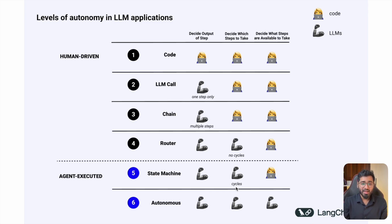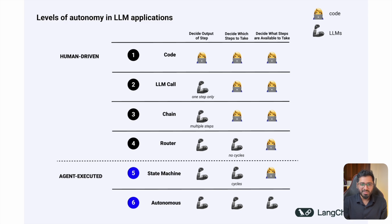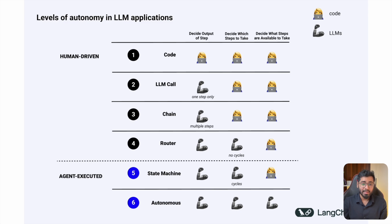The sixth level is completely autonomous agents, where all three columns are handled by the AI. We are not really there yet — there are startups trying to build this, like Baby AGI and Auto-GPT — but the technology is not fully there yet.